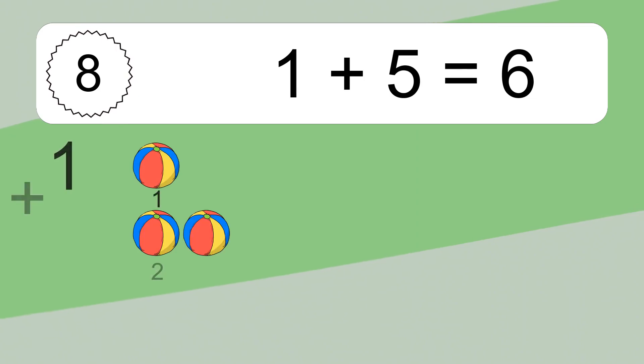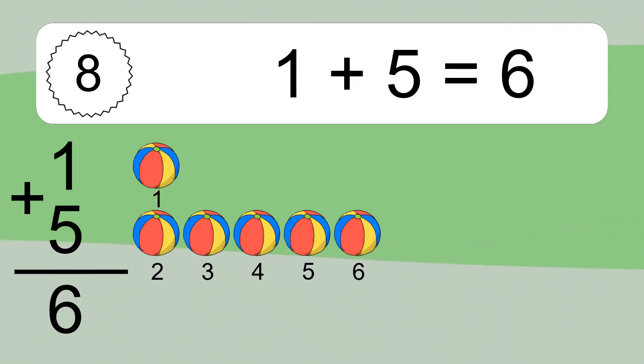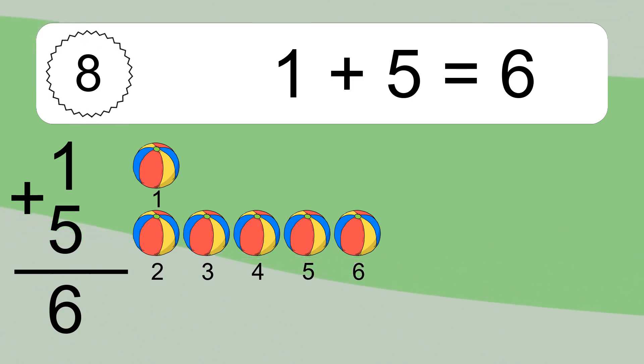1 plus 5 equals what? 1 plus 5 equals 6. Let's count it: 1, 2, 3, 4, 5, 6.